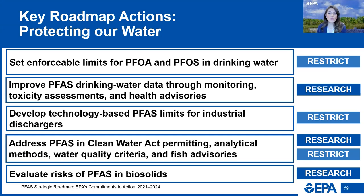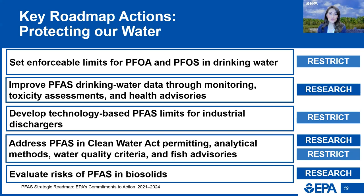Also under the Clean Water Act, we're working to address PFAS in permitting, analytical methods, water quality criteria, and fish advisories. We're working to leverage the National Pollutant Discharge Elimination System, or NPDES, the wastewater permitting program, to improve monitoring and reduce PFAS discharges to waterways. In December 2022, EPA released new guidance to states describing how to leverage permits and pretreatment programs to increase monitoring, including at known or suspected dischargers of PFAS. This guidance will enable states to restrict PFAS at their source and enable communities to work closely with state permitting authorities to take action.